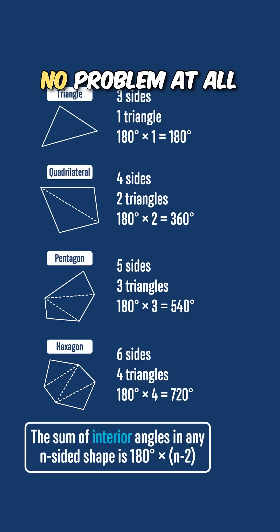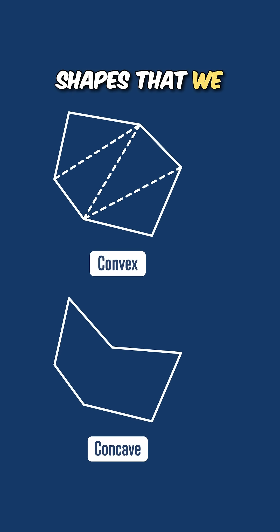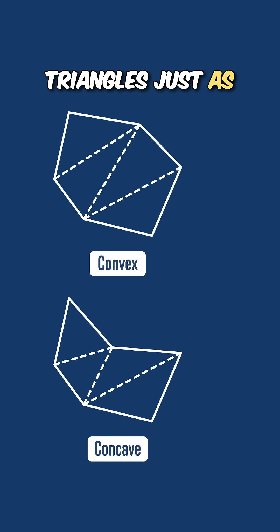By the way, for the interior angles, we have no problem at all with concave shapes that we thought about for the exterior angles. For example, we can split a hexagon that looks like this into four triangles just as easily as we can do with a regular hexagon or any other one.